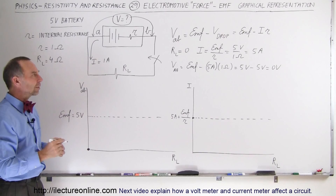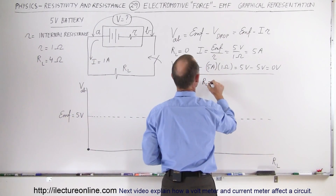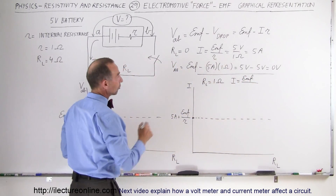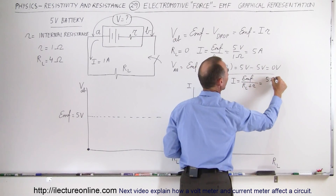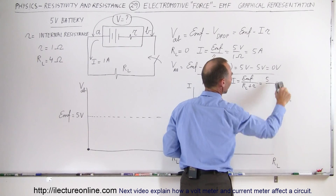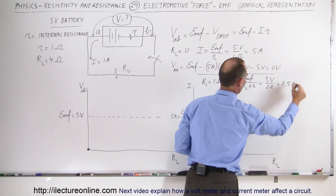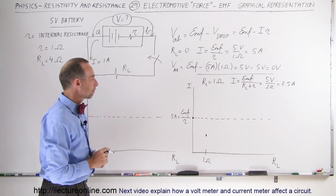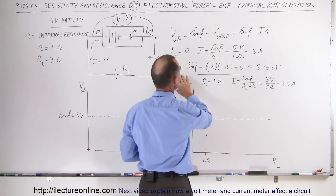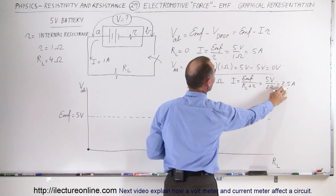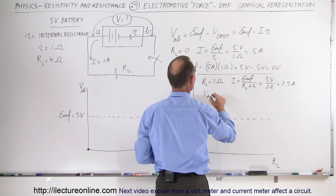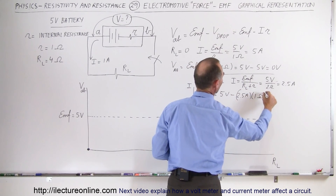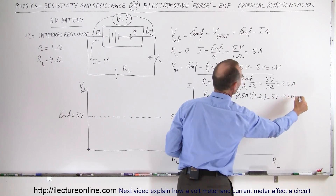What happens when R_L equals 1 ohm? The current I equals the EMF divided by the total resistance — now both the load resistor plus the internal resistance — so 5 volts divided by 2 ohms, which is 2.5 amps. The voltage between A and B will be 5 volts minus 2.5 amps times the internal resistance of 1 ohm. That gives 5 volts minus 2.5 volts, or 2.5 volts.